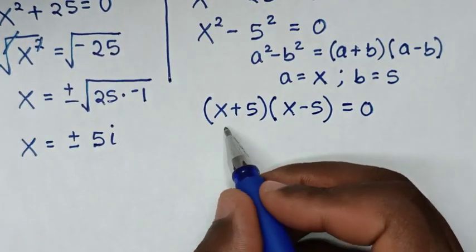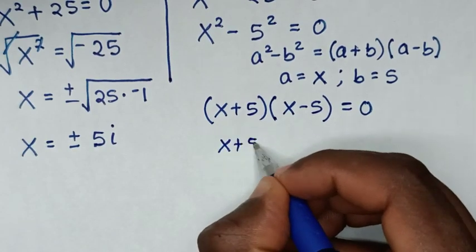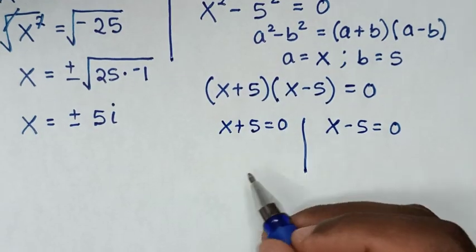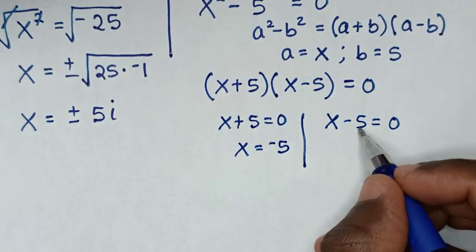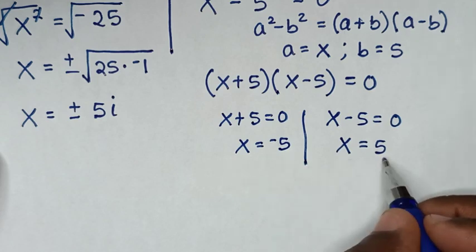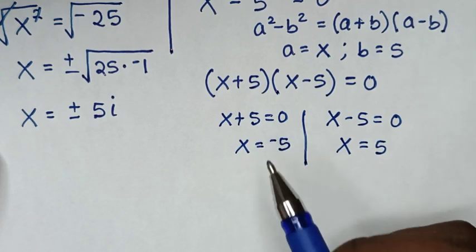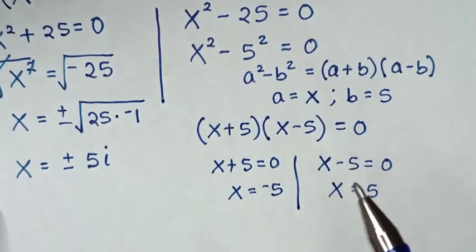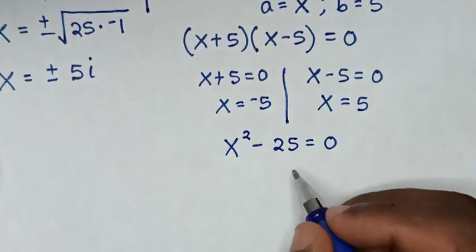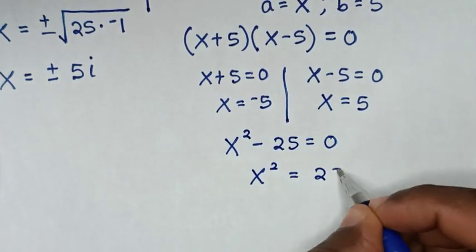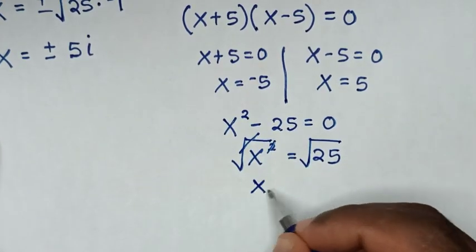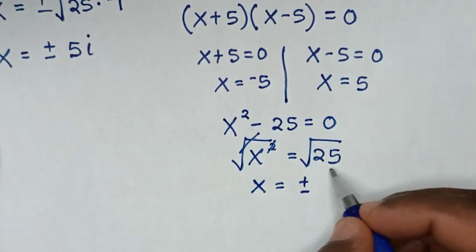From here we have two cases. The first case: x plus 5 equals 0, so x equals negative 5. The second case: x minus 5 equals 0, so x equals positive 5. Applying the square root to both sides confirms x equals plus or minus 5.